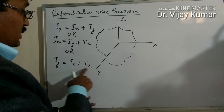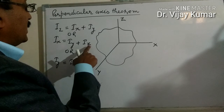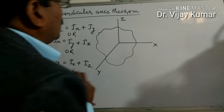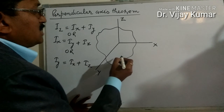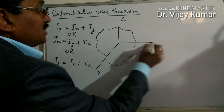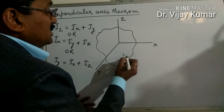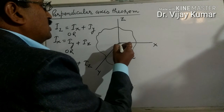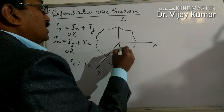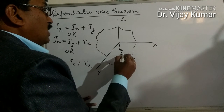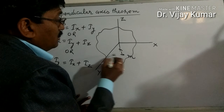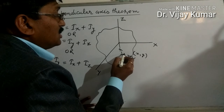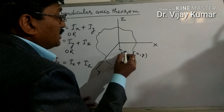Here, x and z are perpendicular to each other, y and z are perpendicular to each other, and x and y are also perpendicular to each other. To derive this, suppose this is the x-y plane. Consider a particle of mass small m, with this being the origin. The distance of this particle is small r, and the coordinate of this point is (x, y).